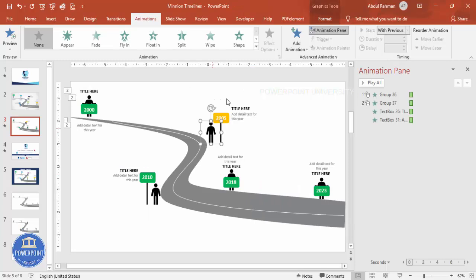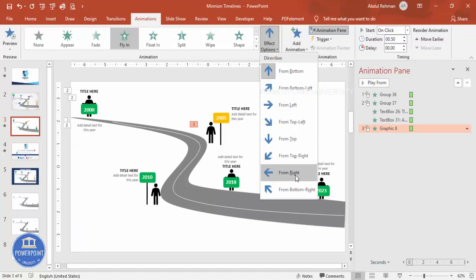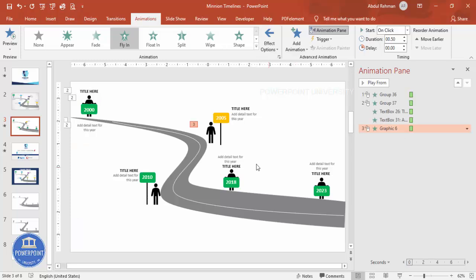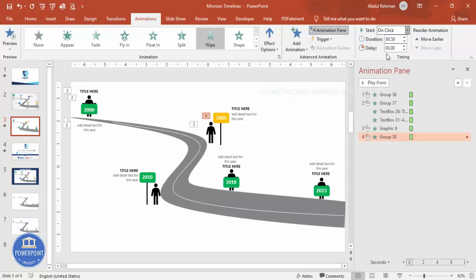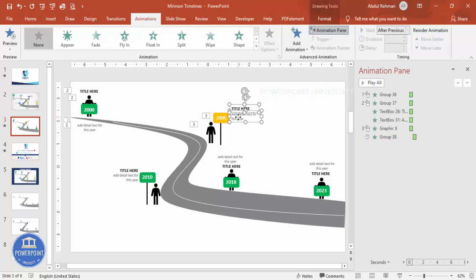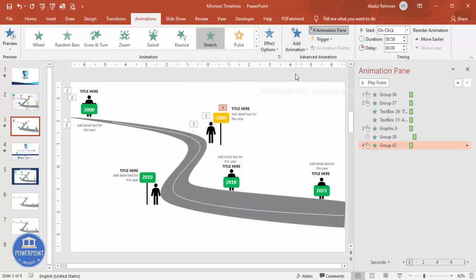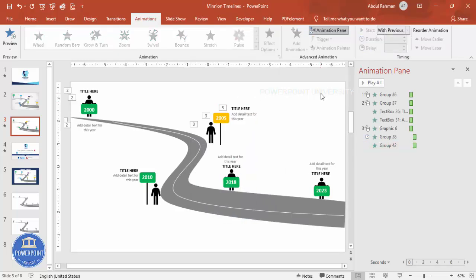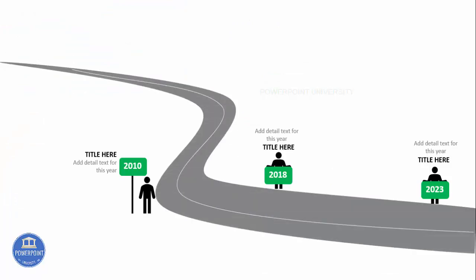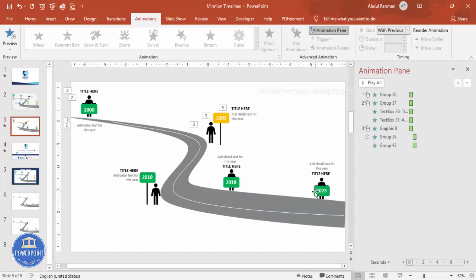Continue adding animations for each subsequent element. For the next year's figure, apply Fly In from the top or right. For the placard, apply Wipe set to After Previous. Group each pair of title and detail text, then apply the Stretch effect from the left, starting With Previous. When you play the presentation, the road appears first, then each year's figure and text appear one click at a time — 2000, then 2005, and so on.